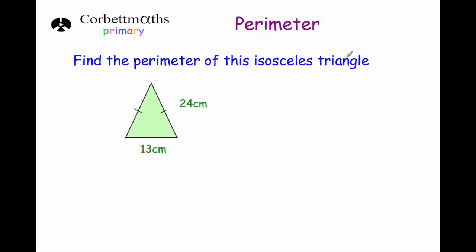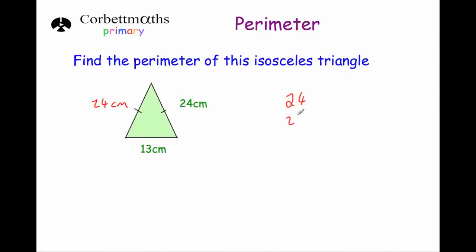This time we've got an isosceles triangle, which is a triangle where two sides are the same length, shown by little dashes. The right hand side and the left hand side are the same length here. So if the right hand side is 24 centimeters, the left hand side will also be 24 centimeters. To find the perimeter we add together 24, 24, and 13. Four plus four is eight plus three is 11 — put the one down, carry the one. Two plus two is four plus one is five plus one is six. So the perimeter is 61 centimeters.